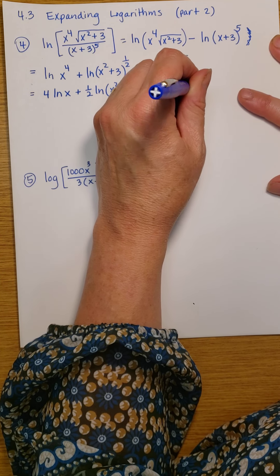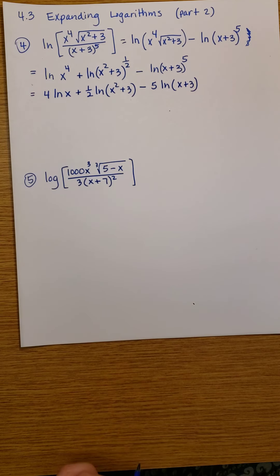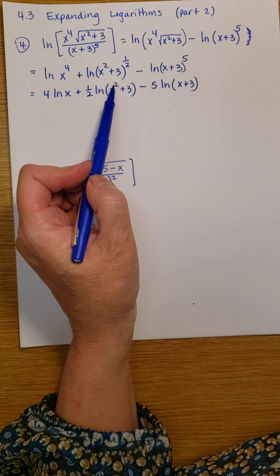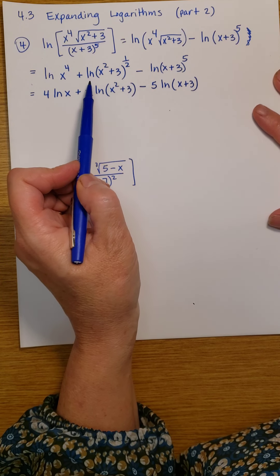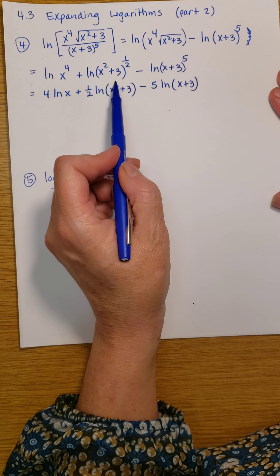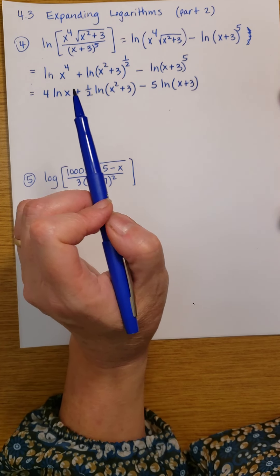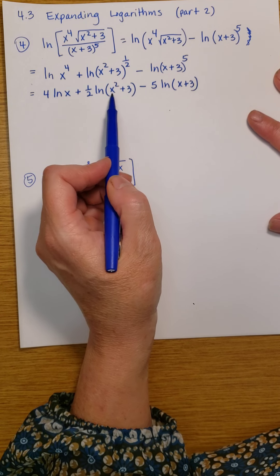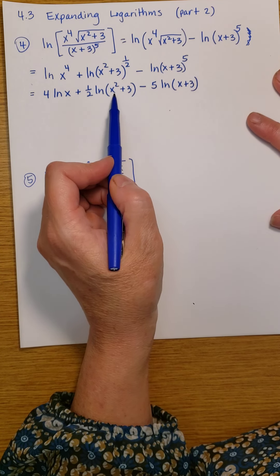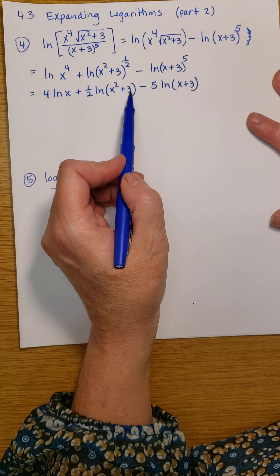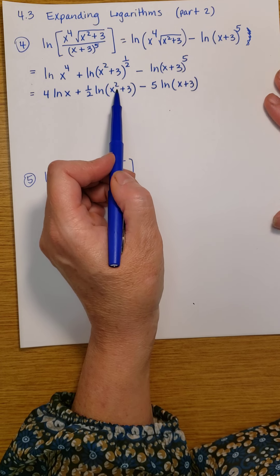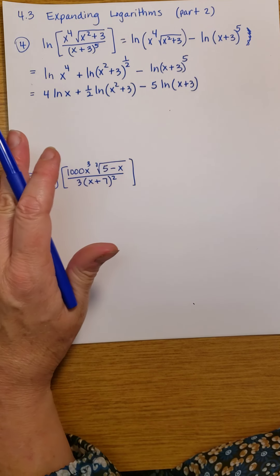Now, you might be tempted — because you can see that here I have x squared — you might be tempted to bring that 2 out front, or you might be tempted to write this as the natural log of x squared plus the natural log of 3. But remember, it's the product that we can expand, and we do not have a product here — we have a sum. This x squared is part of the expression x squared plus 3, so we can't separate that out.